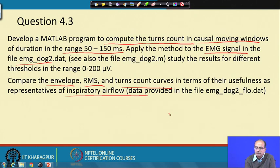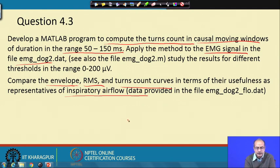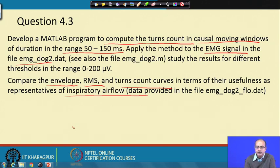The first thing to note is why turns count is compared with the envelope or RMS. The envelope or RMS gives the amplitude of the signal; similarly, turns count gives the frequency — the number of times the muscle fibers are activated or engaged for the job. So it also gives an index of the force exerted by those muscles, and they should be comparable in some way, which is proportional to the air flow.